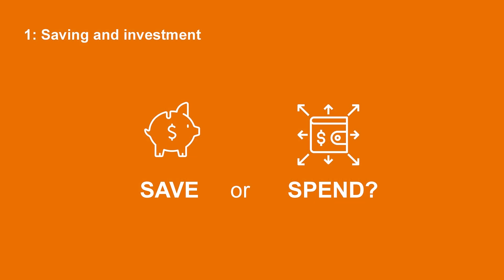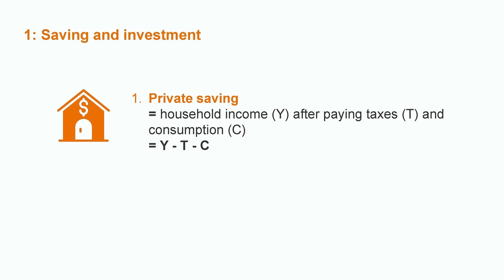First, let's talk about saving and investment. The same as in real life, agents in economic models make decisions about whether to spend or to save their income. There are two types of savings in classical economic modelling. The first one is private saving. Your savings and my savings will fall into this category. Private saving is equal to household income after paying taxes to the government and after all consumption spending.